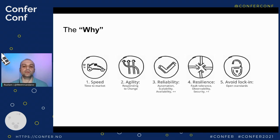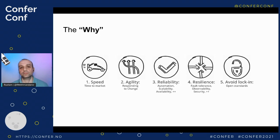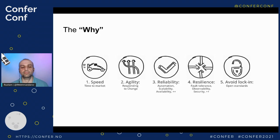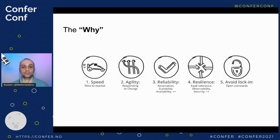The third thing would be reliability. Obviously you want to have applications that are reliable, that are there for you when you need them — or for your users, your customers, or whoever might be using them. The fourth thing is very often resilience. People want resilient applications, applications that handle failures, that you can observe, and so on.